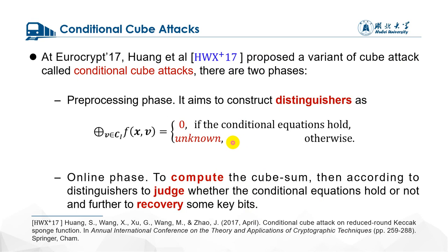Conditional cube attack is a variant of cube attack. In preprocessing phase, the adversary can impose some conditions on k bits to form conditional equations and construct a conditional cube distinguisher. That is, if the conditional equations hold, then the corresponding cube sum must be equal to zero. Otherwise, its value is unknown. Then in the online phase, the adversary can use the cube to compute the cube sum, and according to the value of the cube sum, we can judge whether the conditional equations hold or not, and further to recover some k bits involved in the conditional equations.